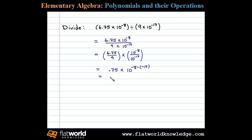We can simplify that a little further and write 0.75 times 10 to the negative 8 plus 17, or 0.75 times 10 to the ninth.